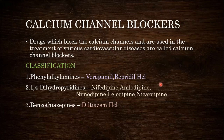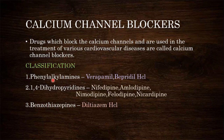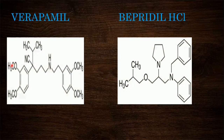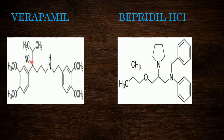Now we will see the structures one by one. First is verapamil, under the phenylalkyl amines class. Two phenyl rings are present, each with two methoxy groups at the third and fourth positions. At the first position an ethyl group is present, to which an amino group is attached. To that amino group a butyl side chain is attached, and at the first carbon of the butyl side chain one cyanide group and one isopropyl group are present. That is the entire structure of verapamil.